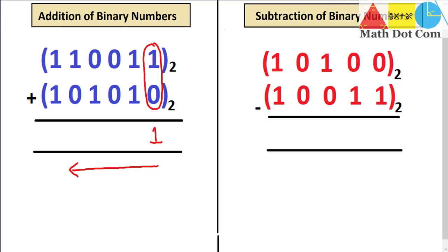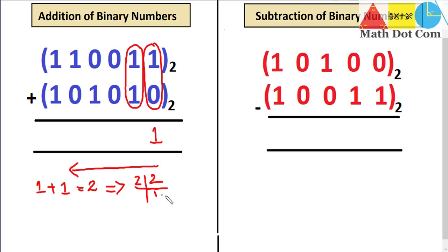When we move to the next column to the left, we have 1 plus 1, which equals 2. In binary numbers we never get 2, 3, 4, or 5 — we must always have a combination of zeros and ones. So for 1 plus 1, we convert 2 from decimal into binary by dividing: 2 divided by 2 gives remainder 0, so 2 in binary is written as 1 and 0.